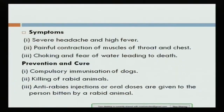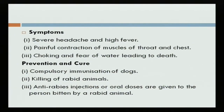Severe headache and high fever are big symptoms of rabies, along with painful contraction in muscles, throat and chest, choking, and fear of water leading to death. Prevention includes compulsory immunization of dogs — if they are vaccinated, they won't spread the disease even if they bite someone. Killing of rabid animals and giving anti-rabid injections or oral doses to the person bitten by the rabid animal are also important prevention measures.